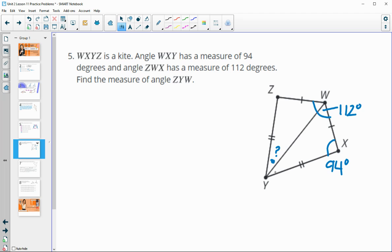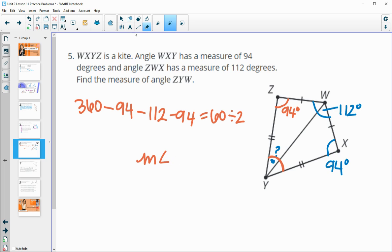So, we know we have a kite, so we can see that this diagonal is splitting it into two congruent triangles. And so, we know that this angle here would also be 94 degrees. We know the total of the four angles in any quadrilateral is 360. So, we can take and do 360 minus these three angles, 94, 112, and 94, so that we can find out the leftover angle, or the missing angle is 60. So, that's for this angle here, and then we only want half of that angle, so we're going to take 60 divided by 2, and that will tell us that the measure of angle ZYW is 30 degrees.